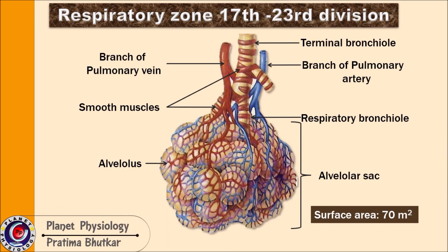From the 17th division onward to the 23rd division constitutes the respiratory zone, where gas exchange takes place. The terminal bronchioles give rise to respiratory bronchioles, which is division number 17. Respiratory bronchioles ultimately terminate to form balloon-like structures called alveoli, and many such alveoli group together to form an alveolar sac. From respiratory bronchioles to the alveolar sac is the site where gas exchange takes place — this is known as the respiratory zone.